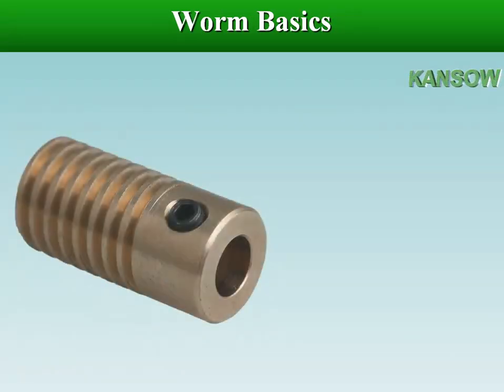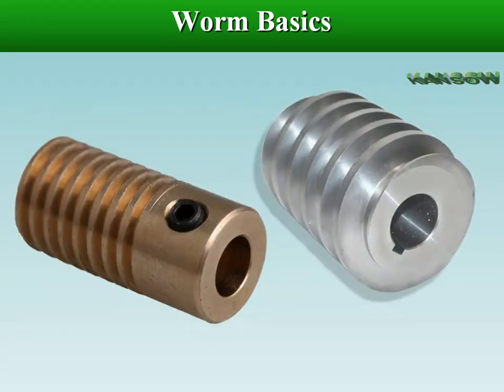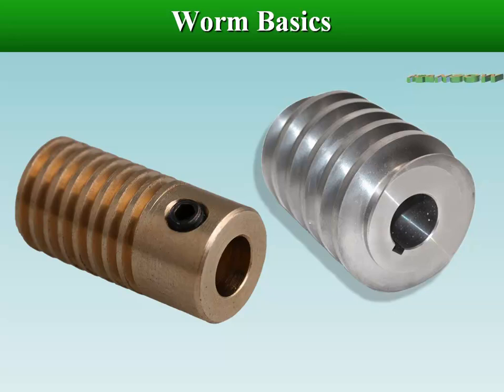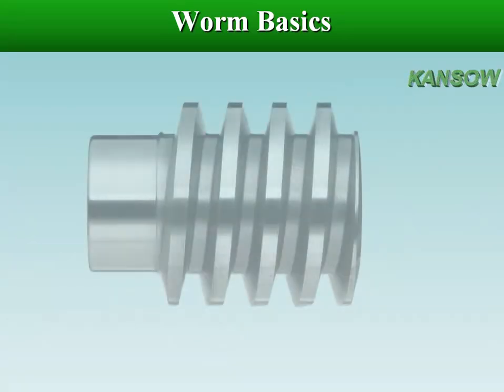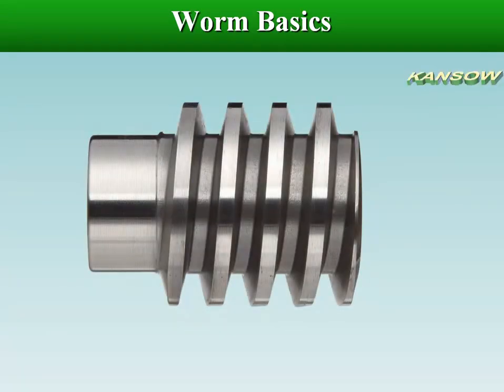The worm, which is the driving member, is usually of a cylindrical form having threads of the same shape as that of an involute rack.